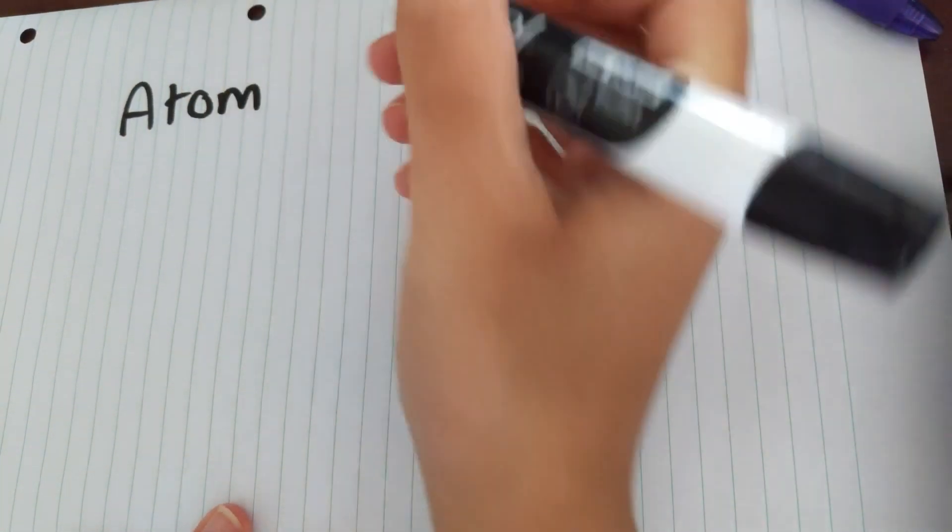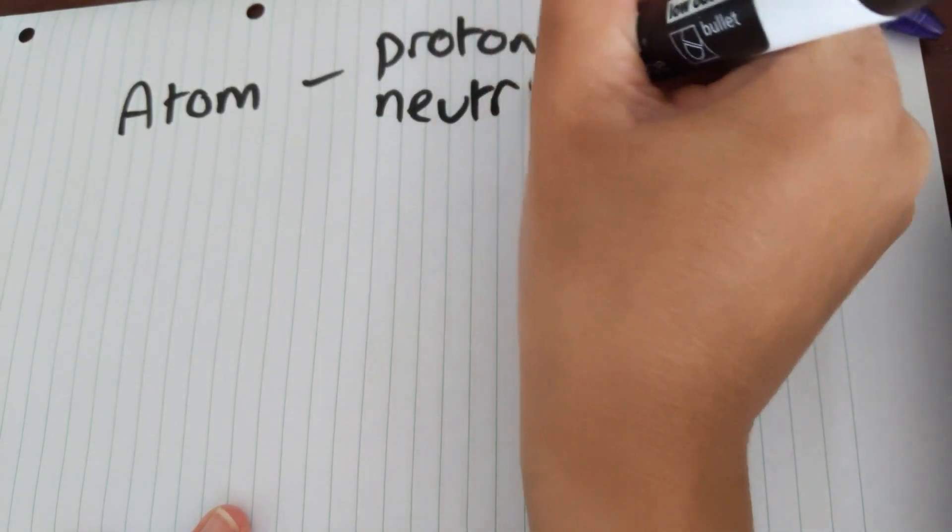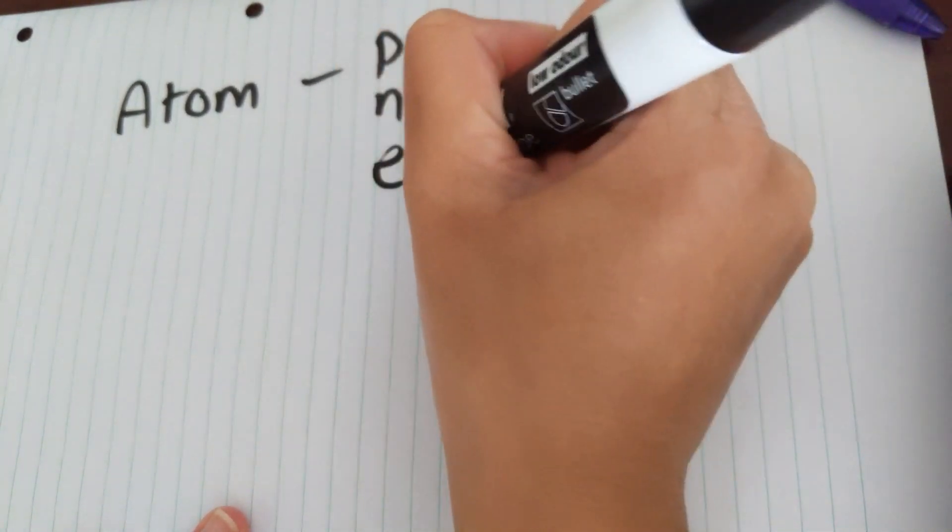So as you will remember, every element is made up of an atom. And within that atom, we've got protons, neutrons and electrons.